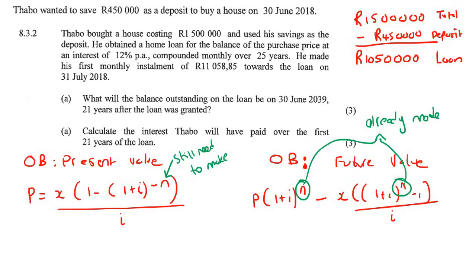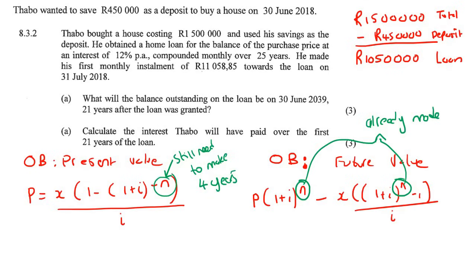He's been paying for 21 years out of 25. Using the present value method, N is the payments still needed — that's 4 more years, so 4 times 12. Using the future value method, N is the payments already made — 21 years, so 21 times 12. Those are the only differences between the two methods. You can choose whichever you prefer.